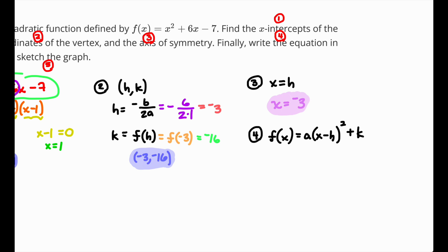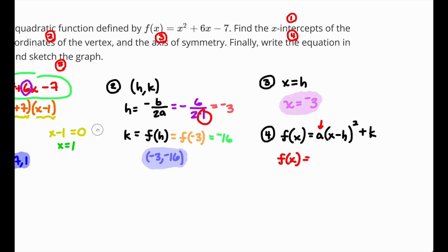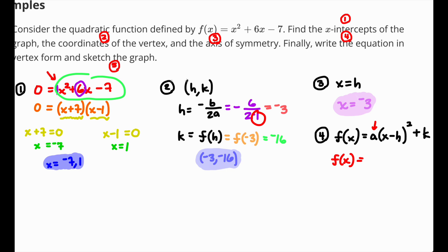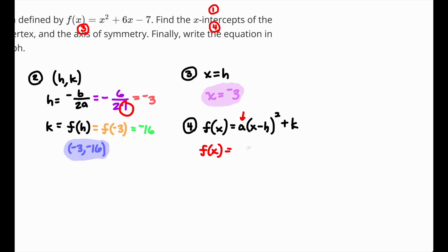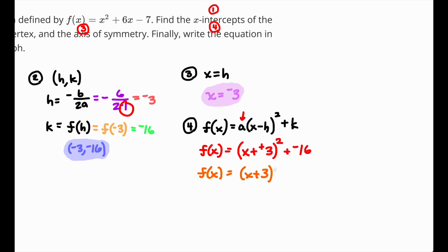Filling in all the values: f of x equals 1 times x minus negative 3 squared plus negative 16. The negative negative becomes a plus, so the final vertex form is f of x equals x plus 3 quantity squared minus 16.